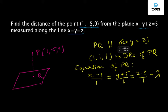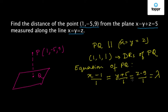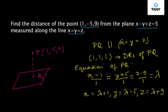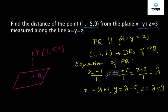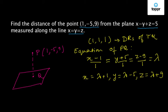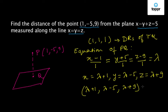From this equation we can write x equal to lambda plus 1, y equal to lambda minus 5, and z equal to lambda plus 9. Any point on this line PQ will have the coordinates (lambda plus 1, lambda minus 5, lambda plus 9). So the coordinates of Q will also be (lambda plus 1, lambda minus 5, lambda plus 9).